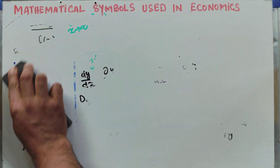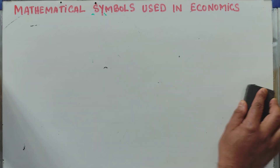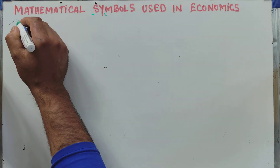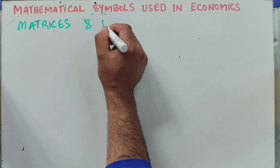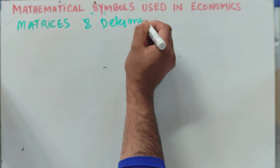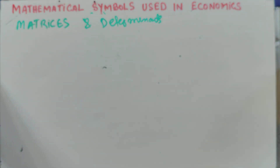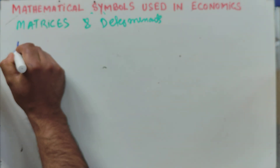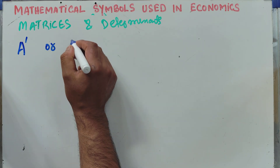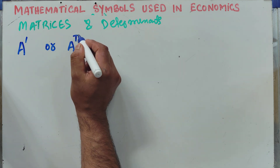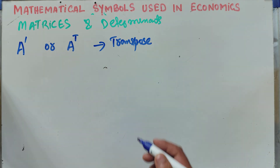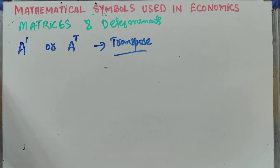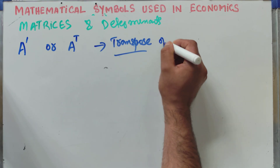Now let's look at matrices and determinants and the symbols used there. The first symbol is A prime, or written as A superscript T — that is A transpose. This denotes the transpose of a matrix, where we interchange rows into columns. This is the transpose of matrix A.